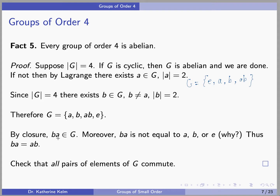But what about ba? By closure, ba also has to be an element of this group. You can check that ba is not equal to a, b, or e, and therefore ba must be equal to ab. Moreover, you can check that all pairs of elements of g commute, and therefore g is an abelian group of order 4.